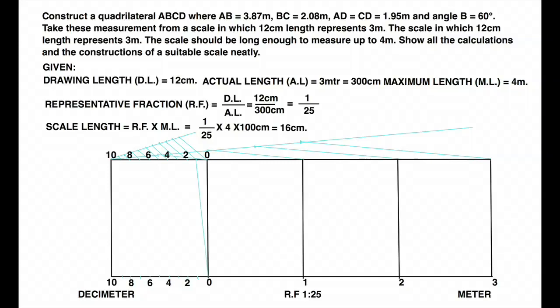Then we will join 0 to 1 because we need to divide that 0 to 1 decimeter into 10 parts to get centimeter. So we will use diagonal scale principle. So join 0 to 1, then 1 to 2, then 2 to 3, 3 to 4, 4 to 5, 5 to 6, 6 to 7, 7 to 8, 8 to 9 and 9 to 10.